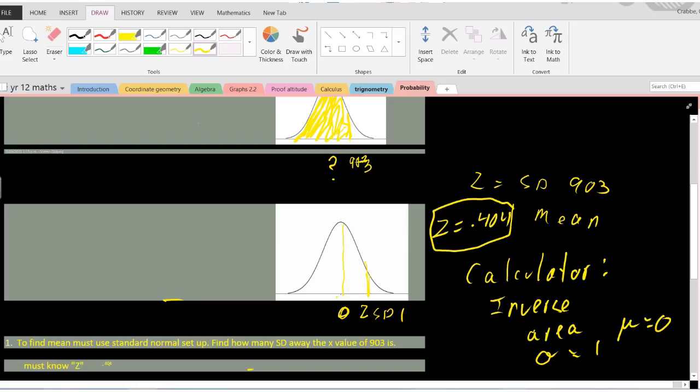By standard normalizing things and being able to use the mean of zero and the standard deviation of one, we can find out the distance that 903 is away from the mean, and in this case it's 0.404.